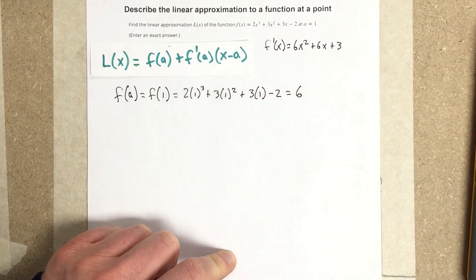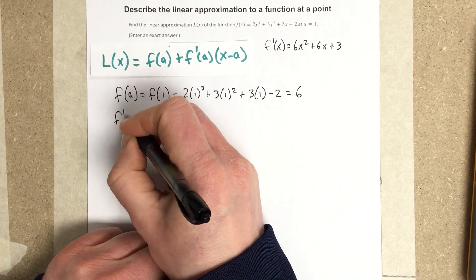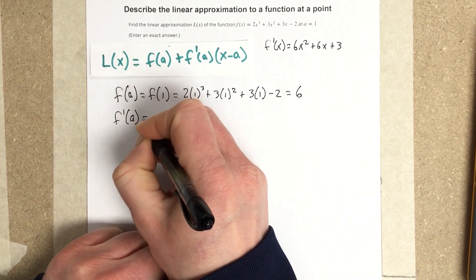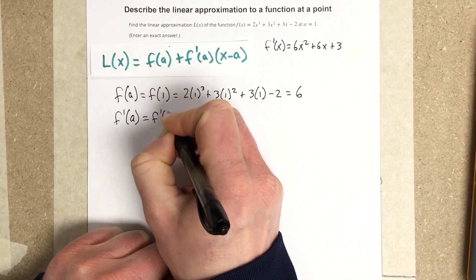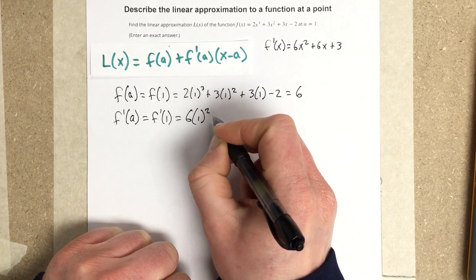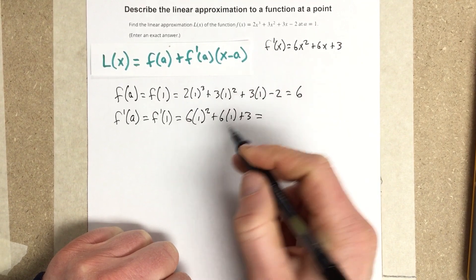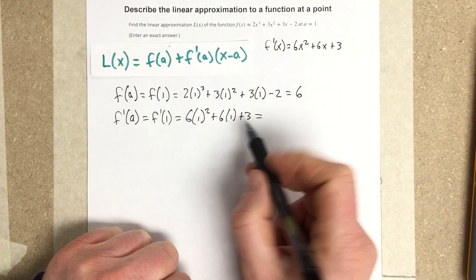Then I'm going to do f'(a), which would be f'(1), which is 6(1)² + 6(1) + 3. So I get 6 + 6 + 3, that's 15.